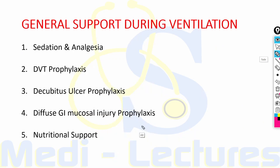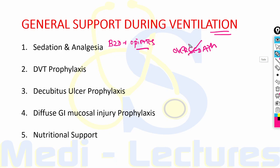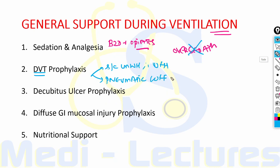General support during ventilation includes sedation and analgesia to maintain acceptable comfort. Benzodiazepines such as lorazepam, midazolam, and diazepam along with opiates like morphine and fentanyl are used, but over-sedation must be avoided as it increases ICU and ventilator stay. Deep venous thrombosis prophylaxis is provided with subcutaneous low molecular weight heparin or IV unfractionated heparin, plus pneumatic compression cuffs and boots.